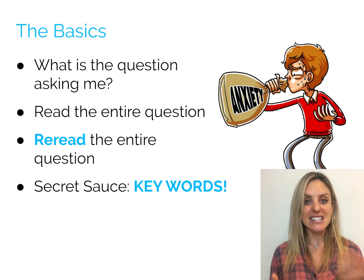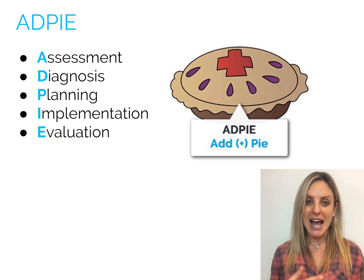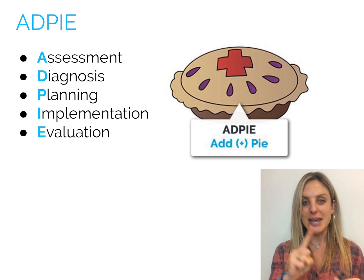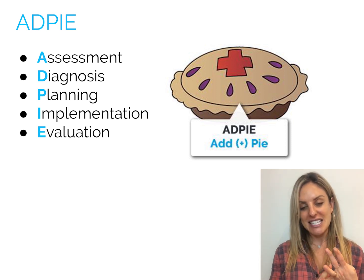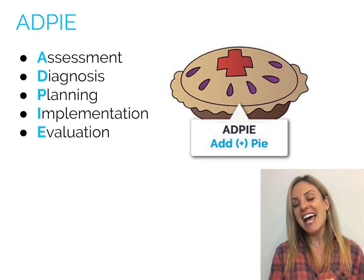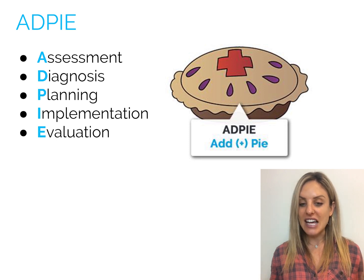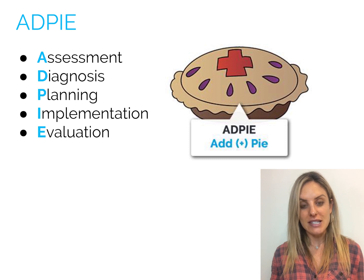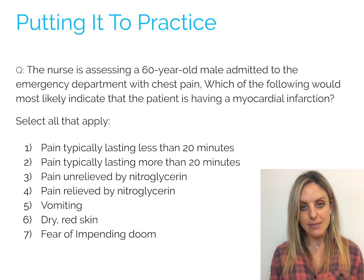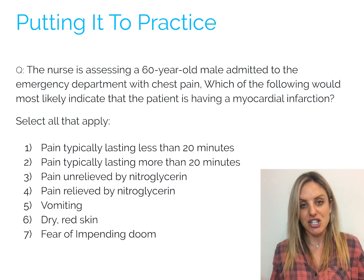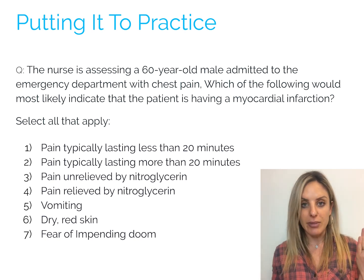A lot of times it's as simple as that. We go back to ADPIE — the nursing process — standing for Assessment, Diagnosis, Planning, Implementation, and Evaluation. Apply it to these NCLEX-style questions and realize it's just asking you a portion of the nursing process. Specifically here, this looks like an assessment question — because it's saying, what are the signs and symptoms that would indicate that the patient is having a myocardial infarction? Basically, it's asking me to be a detective. This is where we need to really understand what a myocardial infarction is and how it would present itself.